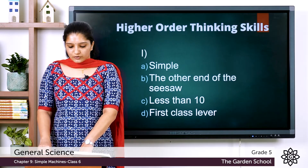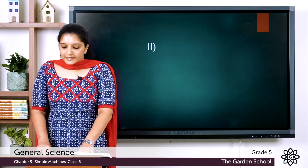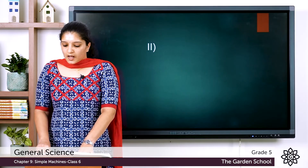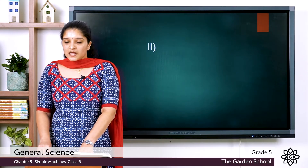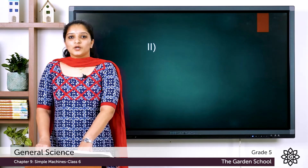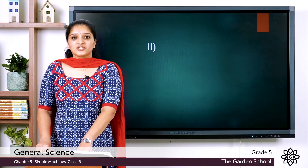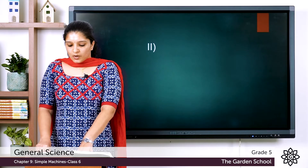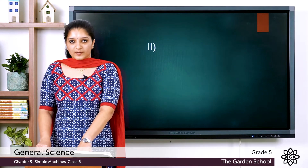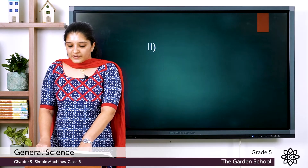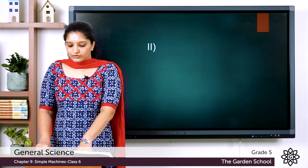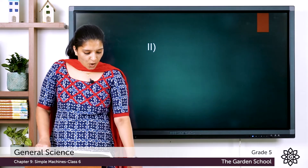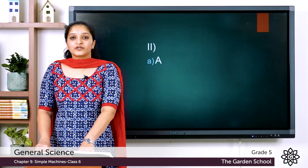Now let's move into the next set of questions. In the given two illustrations, a car is shown being pushed to a height of 5 feet in both cases. Study the illustrations and answer the questions. There are two images shown as image A and image B, and based on these you have to answer three questions. The first question is: which is a steeper slope? The answer is option A. Out of the two images, option A appears to be a steeper slope.